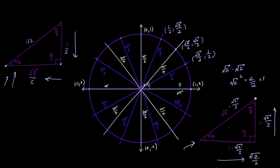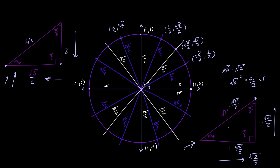A very similar thing happens with the rest of the circle, but you modify signs according to the Cartesian plane. The right side has a positive x-axis, so those x values are positive. In the second quadrant we have a negative x-axis, so x coordinates are inverted to negative. That gives (-1/2, root 3 over 2), (-root 2 over 2, root 2 over 2), and (-root 3 over 2, 1/2) — y coordinates remain positive because we're still going up.